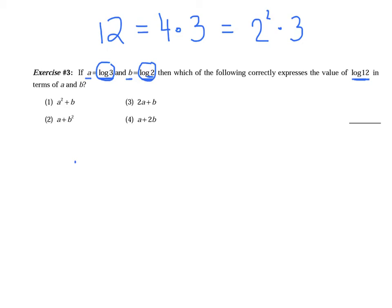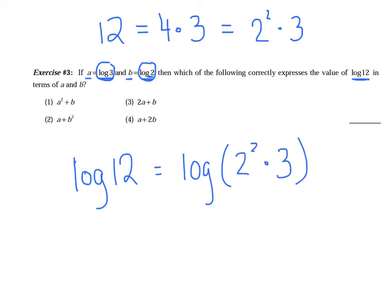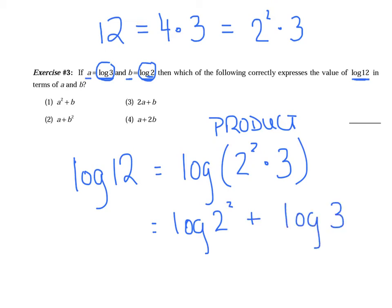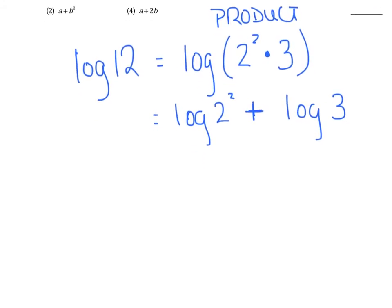So the log of 12 is really equal to the log of 2 squared times 3, substituting 2 squared times 3 in for the 12. Now I'm going to use my product law: log of 2 squared plus the log of 3. I saw multiplication, so I instantly moved to addition. Next I'll use my power rule so the exponent travels and becomes the coefficient: two times the log of 2 plus the log of 3.